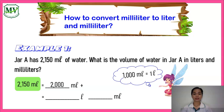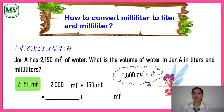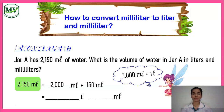One thousand milliliters is equal to one liter, so two thousand milliliters is equal to two liters. Therefore, the volume of water in Jar A is two liters and one hundred fifty milliliters.